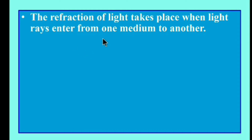When light rays bounce back into the same medium, reflection takes place. When light rays pass from one medium to another medium, refraction takes place. This is the difference between reflection and refraction: in reflection, the light bounces back into the same medium; in refraction, the light bends as it goes from one medium to another.